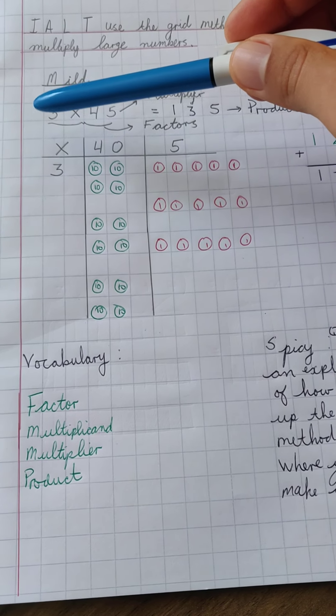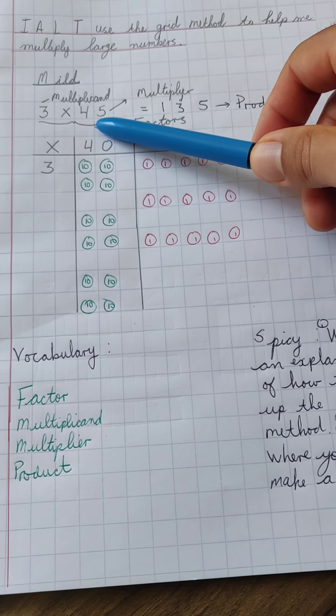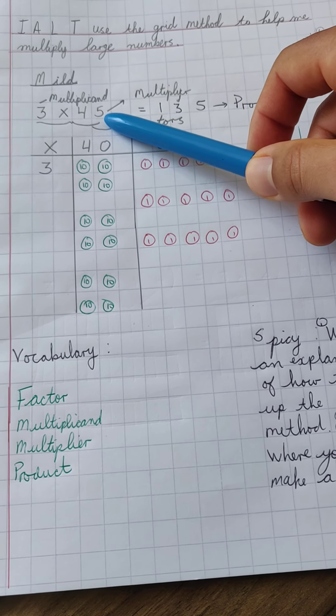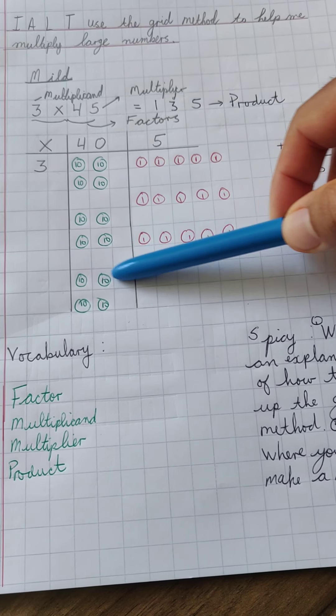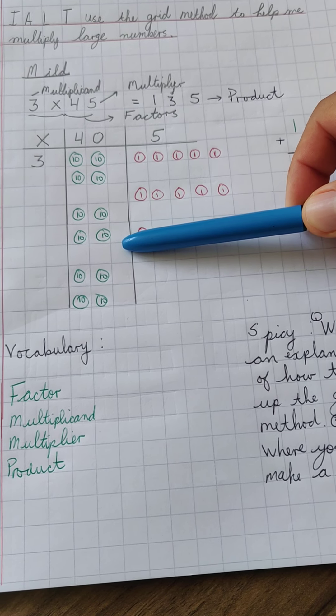Okay so we have got our multiplicand and we have our multiplier. Now with my multiplier in the grid method what I am going to do is I am going to partition it.